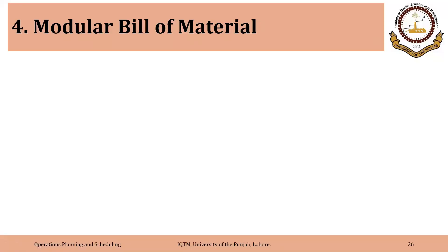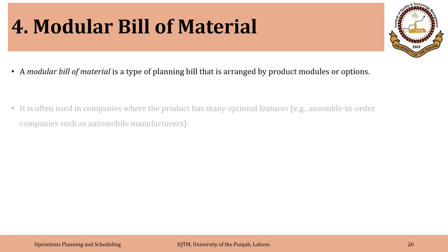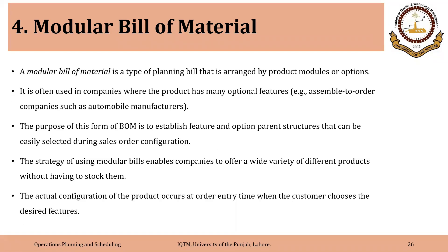The fourth bill of material discussed during master production scheduling is modular bill of material. Modular bill of material is a type of planning bill that is arranged by product modules or options. It is often used in companies where the product has many optional features, for example, assemble-to-order companies such as automobile manufacturers.